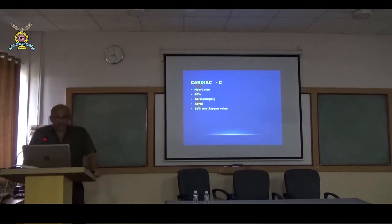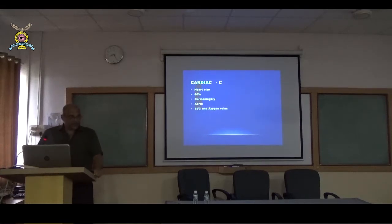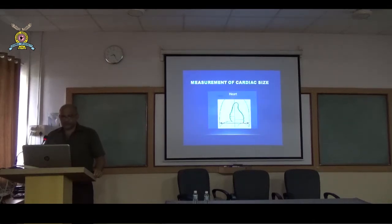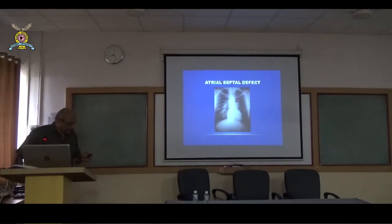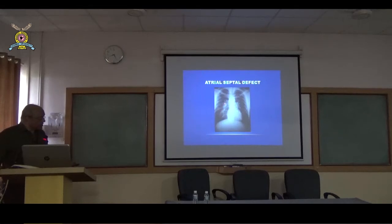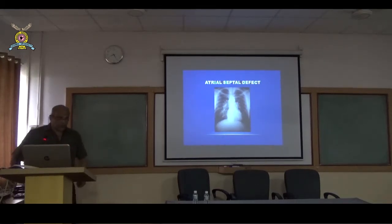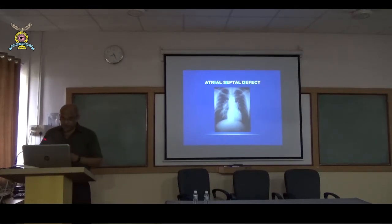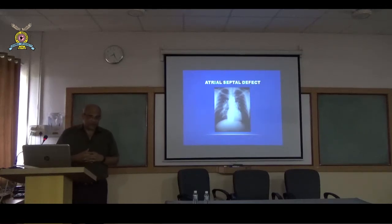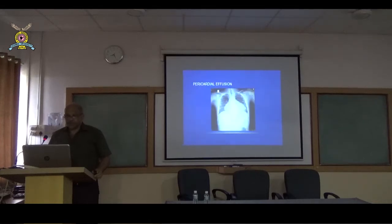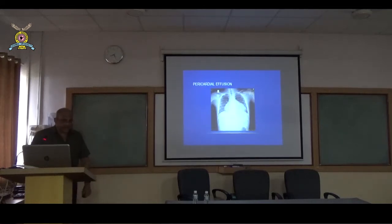Next we go to C — cardiac size. In children, 60 percent is the upper limit of normal to determine cardiomegaly. We need to see the aorta, the superior vena cava and azygous veins, and interpret the pulmonary vasculature. In this X-ray there is no gross cardiomegaly, but the pulmonary vasculature appears very prominent on both sides and the main pulmonary artery is more prominent — increased pulmonary vasculature, known as pulmonary plethora. This is a case of atrial septal defect (ASD); PDAs and VSDs may also present in this manner.